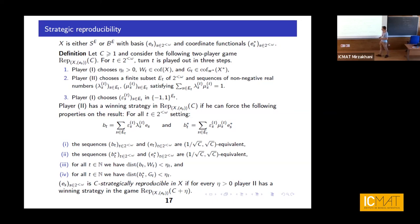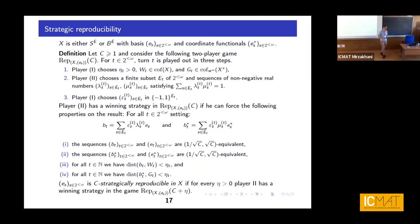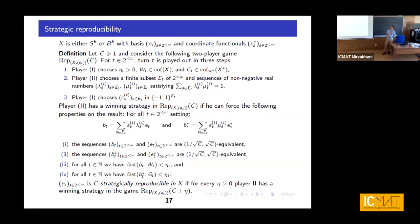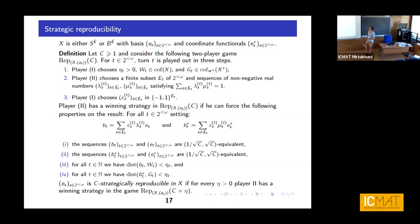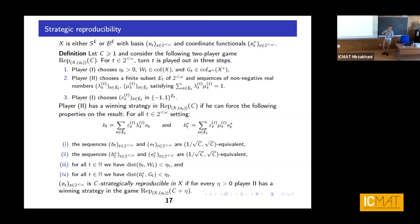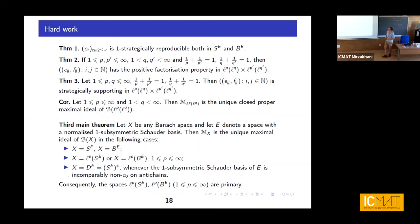We say the basis is C-strategically reproducible if for every eta, the second player has a winning strategy. This definition follows the scheme of definitions defined in terms of games for Banach spaces and Schauder bases — not a very novel idea, but something that works in this setting and fits our framework of working with the Haar system and the Cantor set.